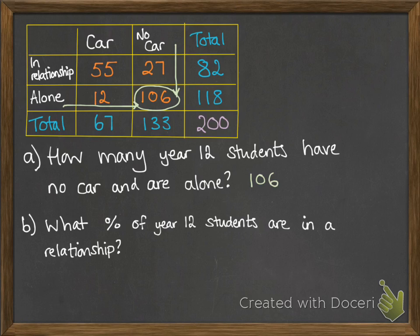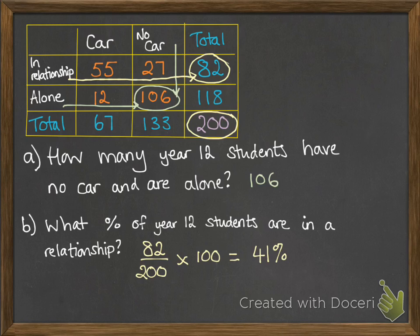And now from this group, what percentage of year 12 students are in a relationship? So regardless of whether they've got a car or not, how many of them are in a relationship and work that out as a percentage? So we just want to read across this in a relationship row to give us this 82 out of a total of 200 students that were asked, which gives us this percentage.